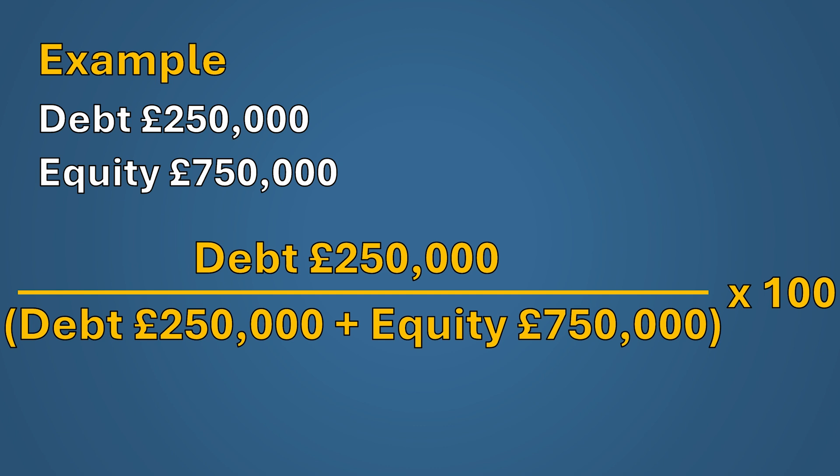That equals 25%, so Hawkins Limited has a gearing ratio of 25%. Next, we need to look at what a good gearing ratio is.